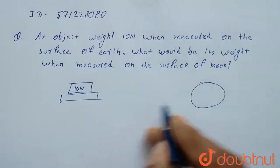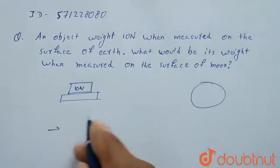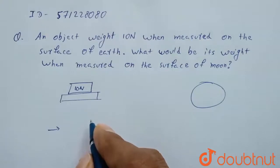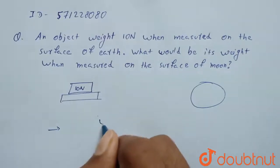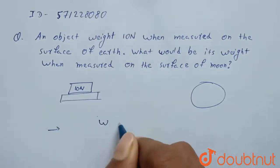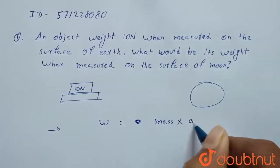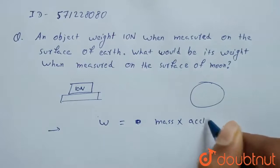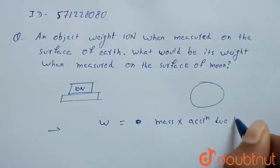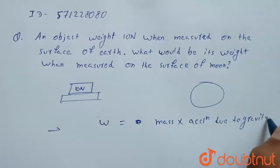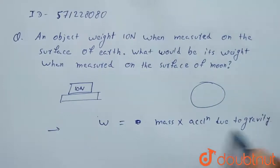So basically acceleration due to gravity is responsible for varying of weight. Why? As we can see, weight equals to mass of object multiplied by acceleration due to gravity. And we have to take acceleration due to gravity of that planet on which weight is being measured.